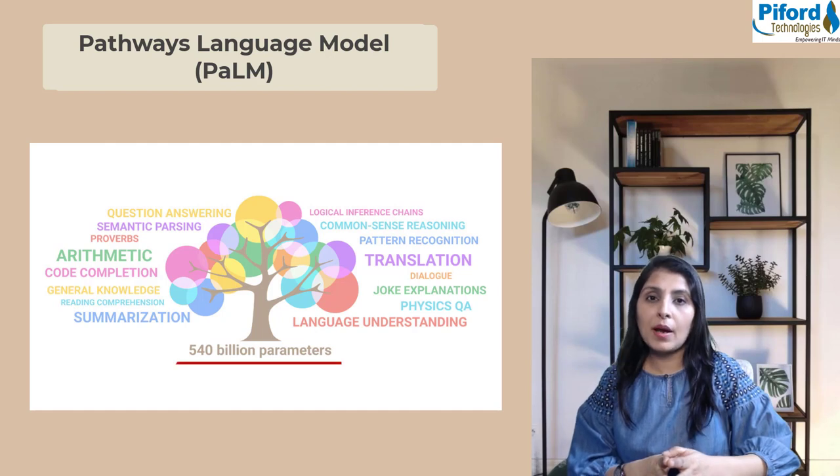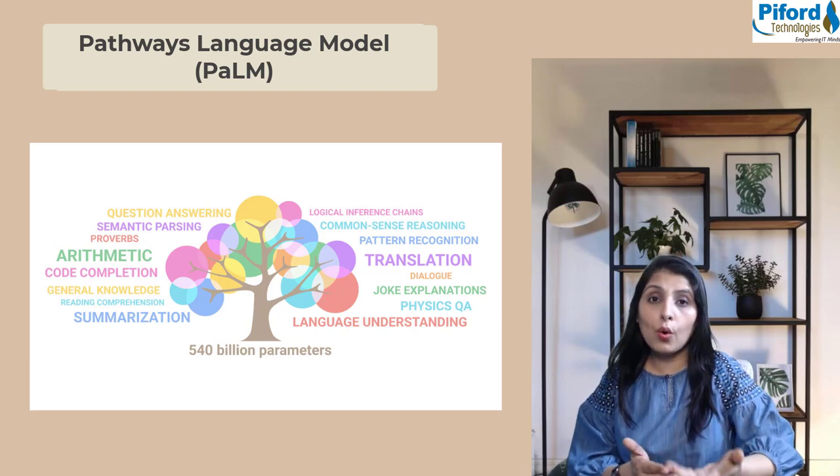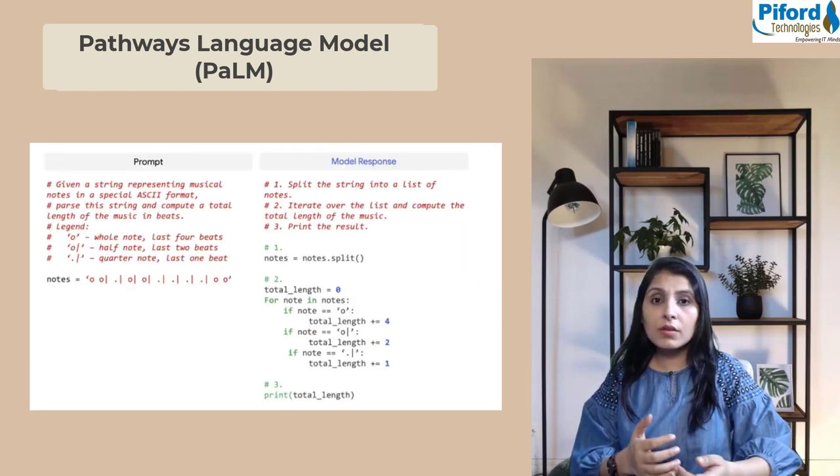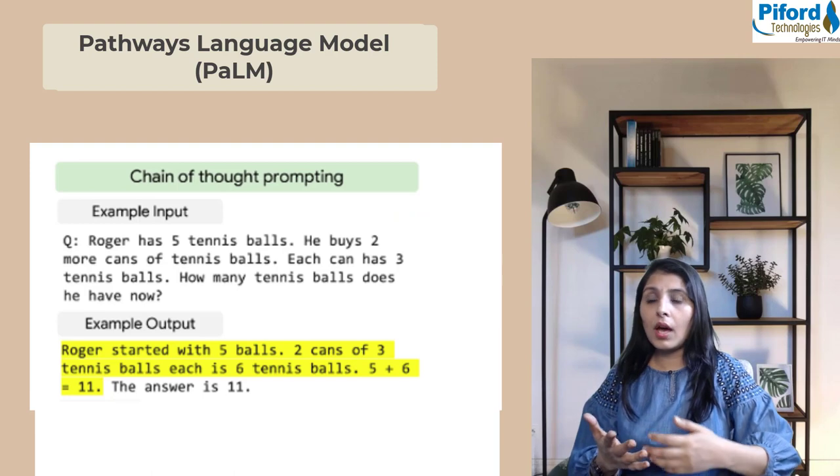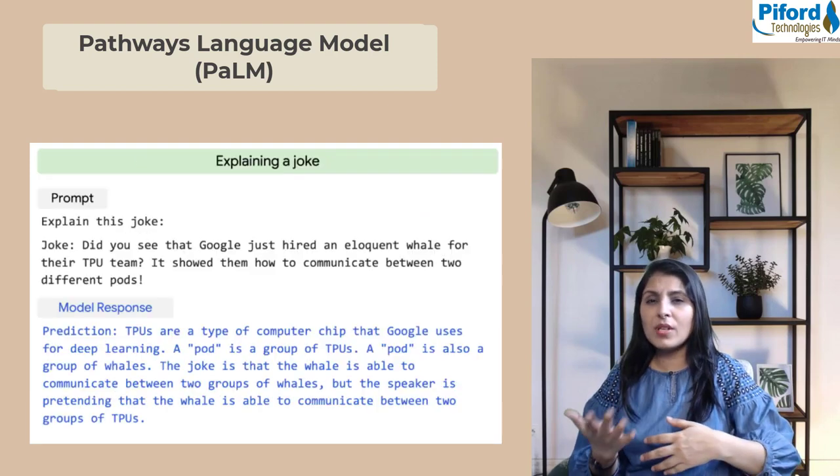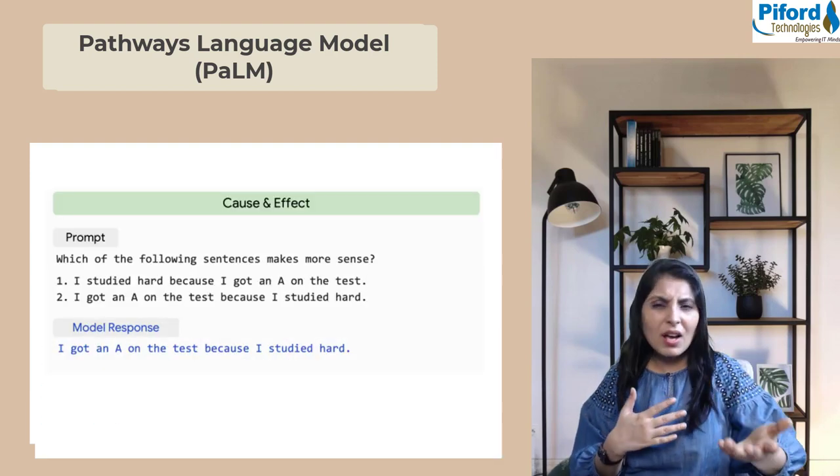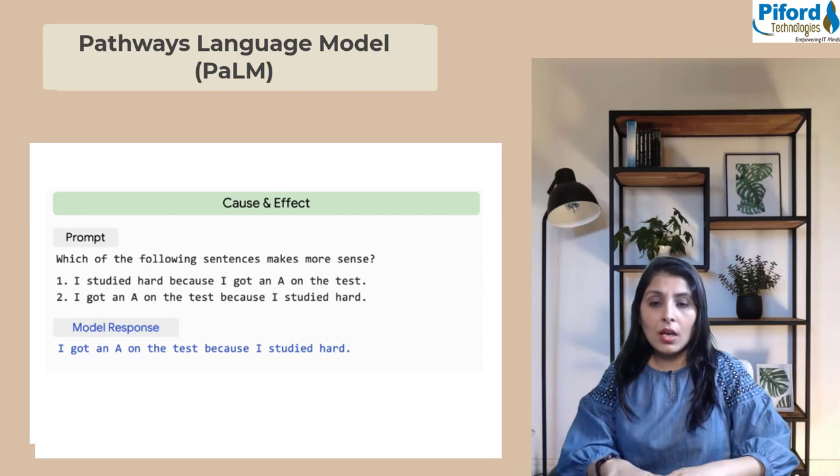...on 540 billion parameters and can perform many natural language processing tasks like generating code from text, answering math word problems, explaining jokes, common sense reasoning, and translations.